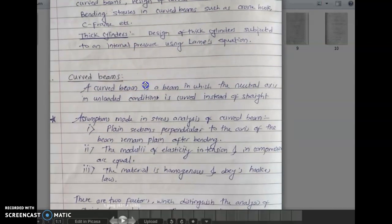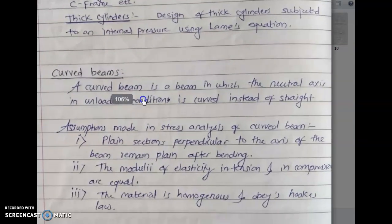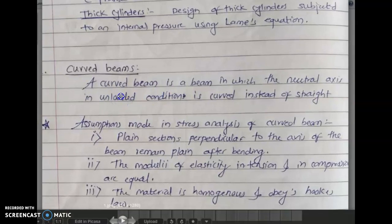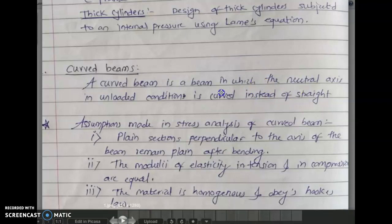First, we will see what curved beams are. The definition: a curved beam is a beam in which the neutral axis in an unloaded condition is curved instead of straight. The neutral axis is the axis where there is no tension or no compression acting.